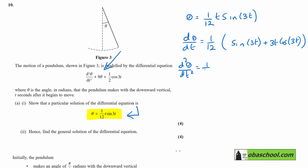Differentiating again, d²θ/dt² = (1/12)[3cos(3t) + using the product rule on 3t·cos(3t): cos(3t) times the differential of 3t gives 3cos(3t), and 3t times the differential of cos(3t) gives −9t·sin(3t)].